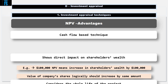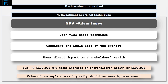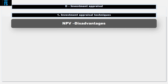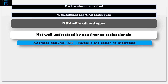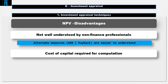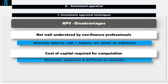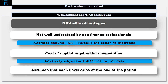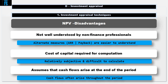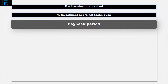NPV is based on cash flows and considers the whole life of the project. However, it also has its disadvantages. It is not used that often in practice because it is not well understood by non-finance professionals. Alternative measures like accounting rate of return and payback period are more immediately accessible to understand. It needs a cost of capital to be able to calculate it — this is the discount rate that is used, and it is relatively subjective and difficult to calculate. It also assumes that cash flows arise at the end of the period, whereas operating cash flows often arise throughout the period.